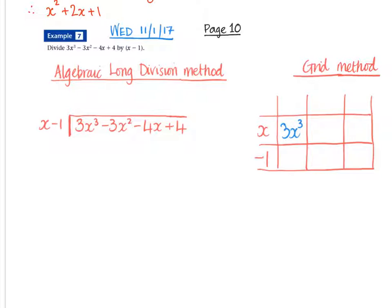Looking at the algebraic long division, we say to yourself: what times x will give us 3x squared? So in this case it's going to be 3x squared.